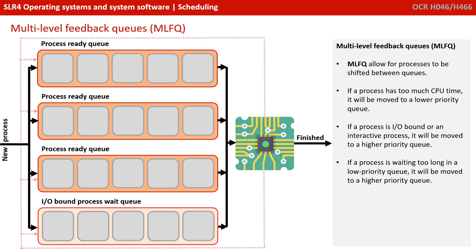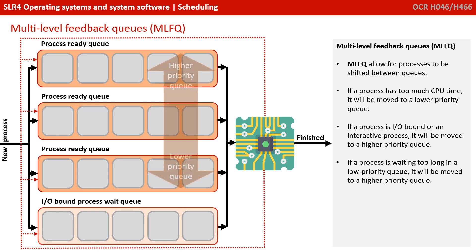The multi-level feedback queue allows for processes to be shifted between the various queues. If a process has too much CPU time, it will be demoted to a lower priority queue. If a process is input-output bound or interactive, it will be promoted to a higher priority queue. And if a process is waiting too long in a low priority queue and starving, it will be moved to a higher priority queue. These different queues can also be set up to use different scheduling algorithms.